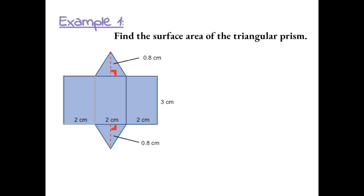We need to find the area of each individual shape. Starting with this shape, we do 3 times 2, which gives us 6. This one is also going to be 6 because it has the same dimensions, and this one is also going to be 6 because it also has the same dimensions.